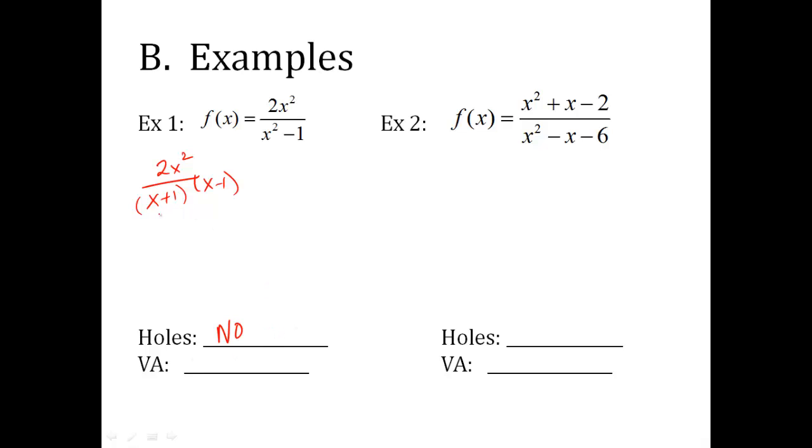Nothing I can cancel here, so I just say no for holes. Vertical asymptotes. I set whatever is in the denominator equal to zero and solve for x. It's very much like domain. So x is negative one, x is positive one. These are my vertical asymptotes. Yes, you can have more than one. That's all I have to do.